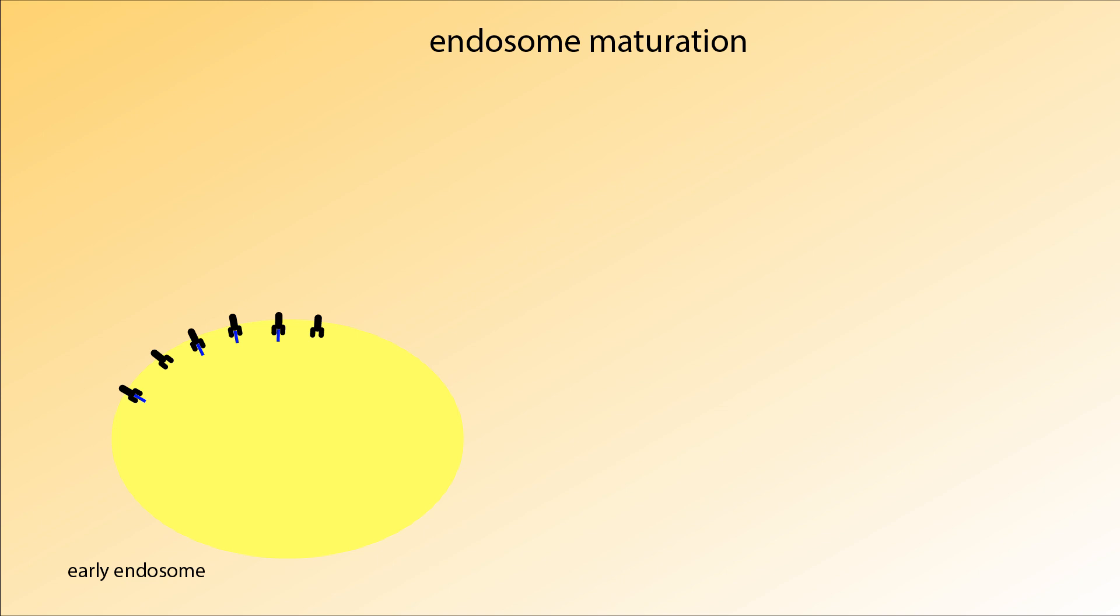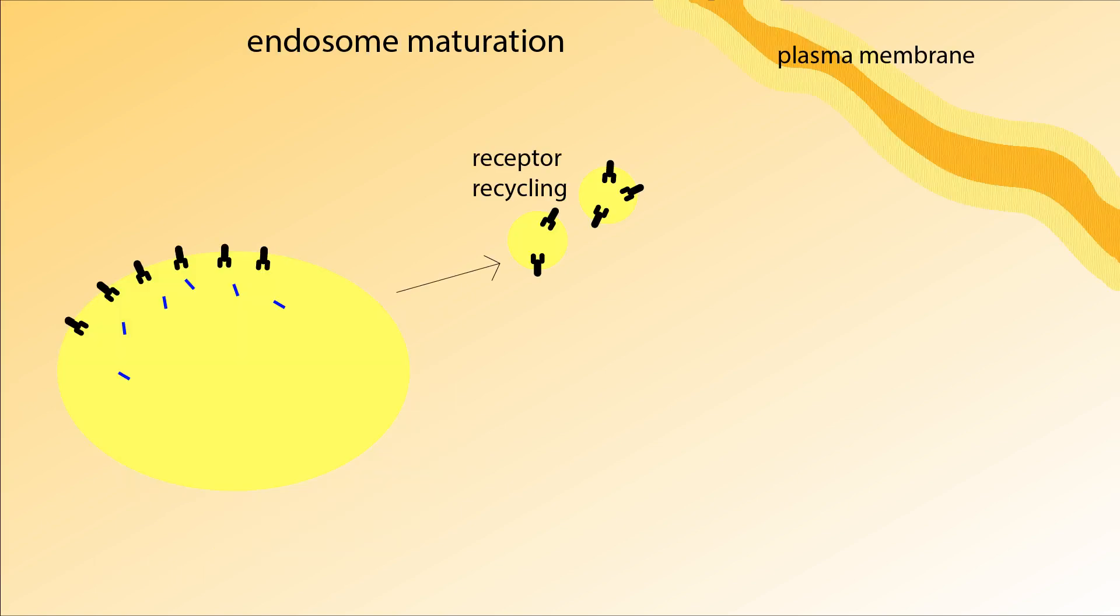Endosomes contain proton pumps, so they are slightly acidic. When a vesicle fuses with an early endosome, the lower pH causes the receptors to release their ligands into the endosome lumen. All ligands and some receptors remain in the endosome to be degraded. Receptors to be recycled are packaged into new vesicles that return to the plasma membrane.